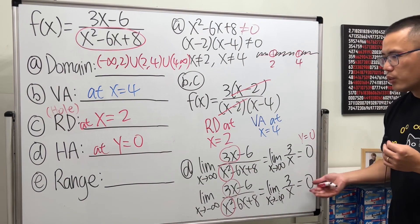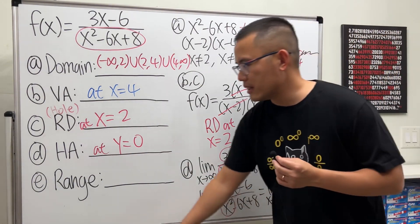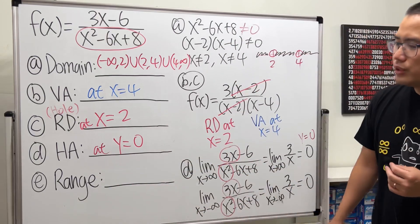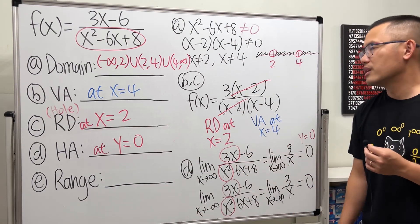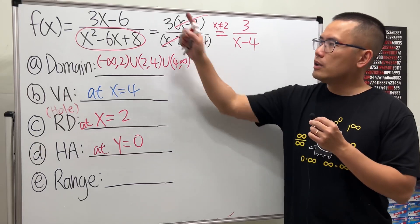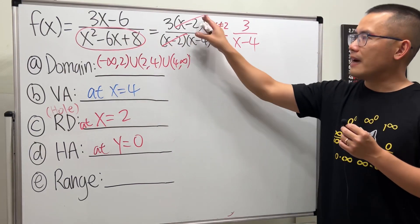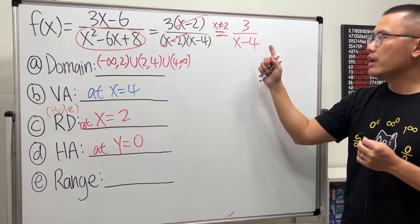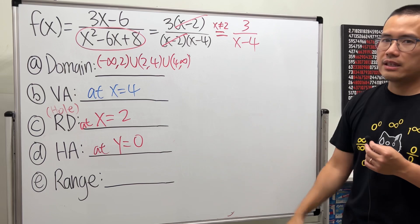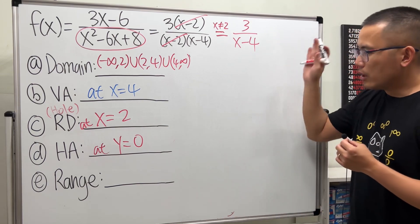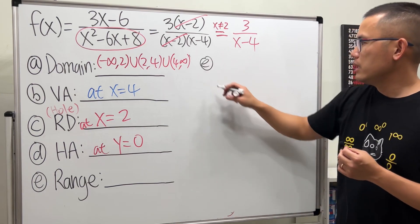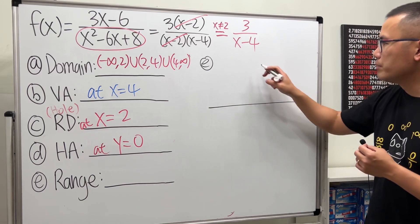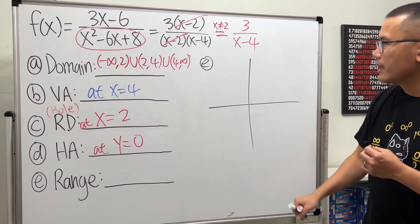And since they are equal, of course, we just have one. Now, perhaps the trickiest one is the range. Remember earlier, we start with the original, and we factored it, and we canceled it. And keep in mind, x cannot be equal to 2. And from here, of course, x cannot be equal to 4. So, look at the picture. Even though the question didn't ask you to do so, but just look at the picture.